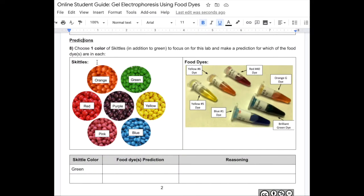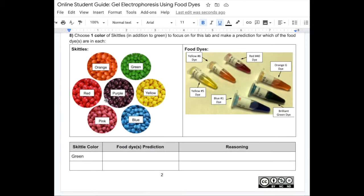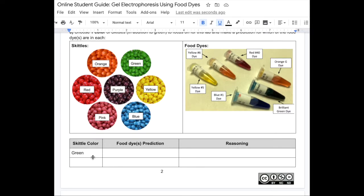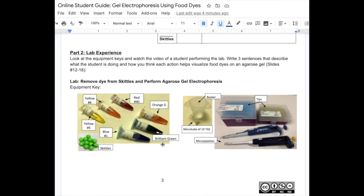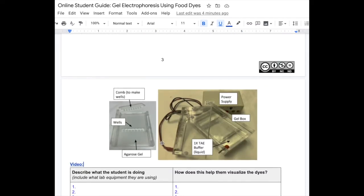they'll make some predictions about which food dye molecules may be on the outside of a green Skittle and another Skittle of their choosing. Next, they'll review the reagents and equipment necessary for the lab, then answer questions after watching a short point of view video.